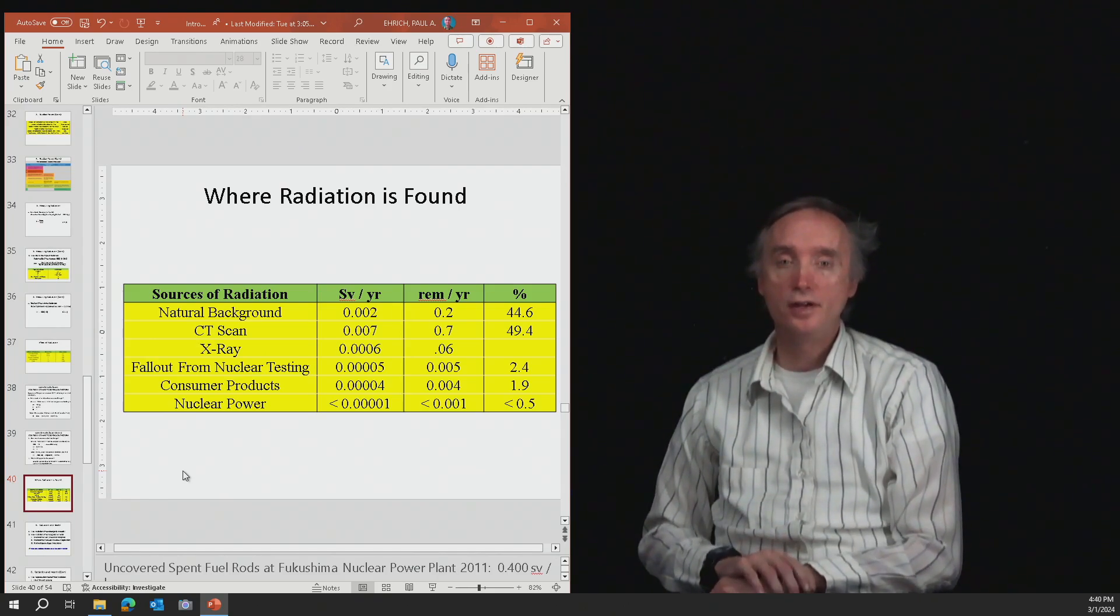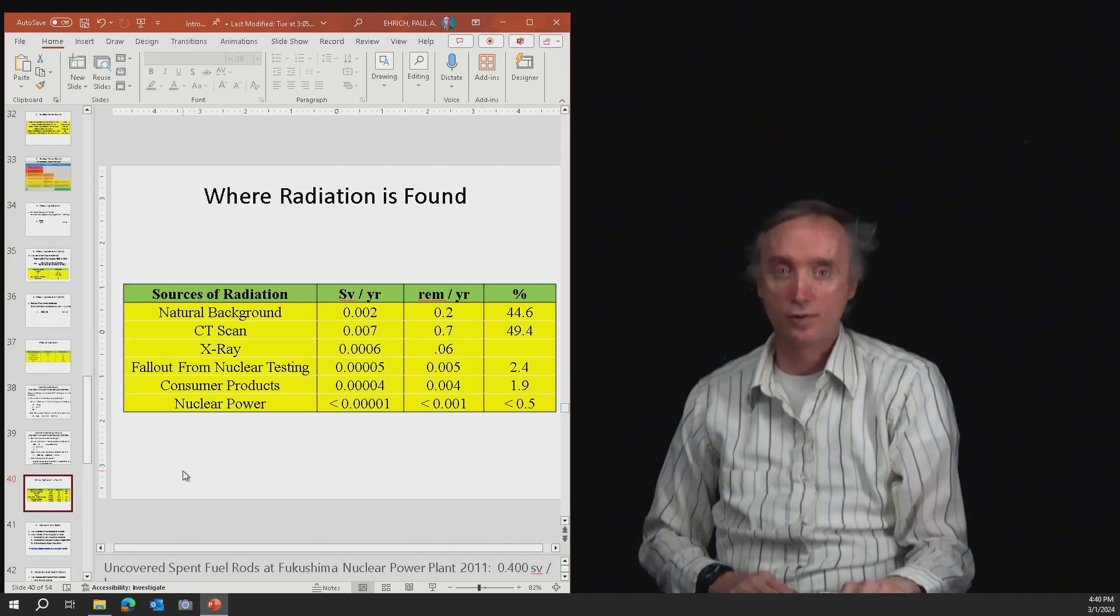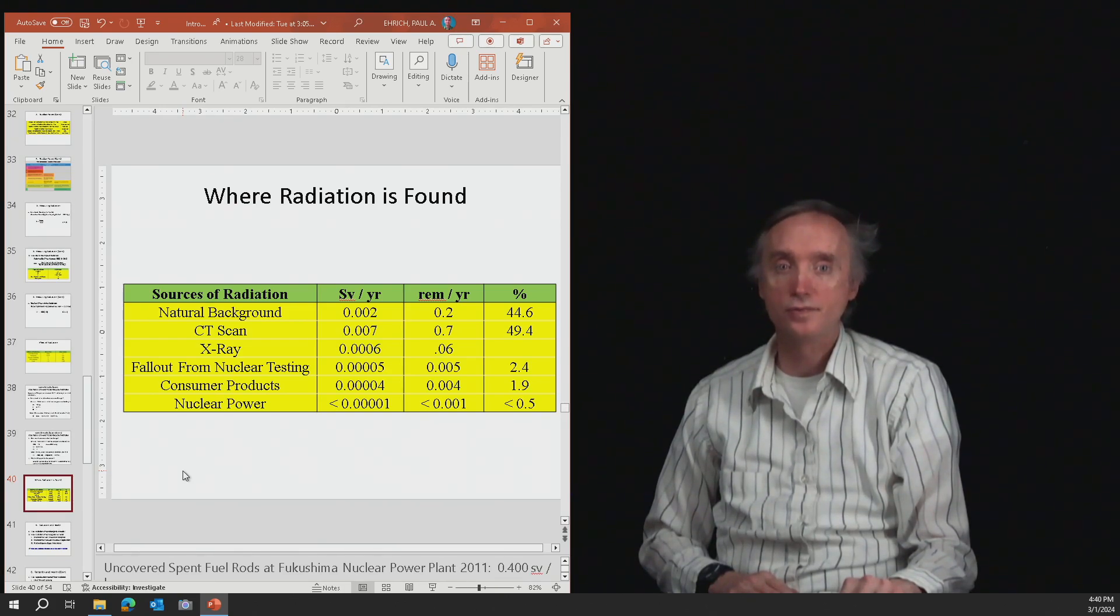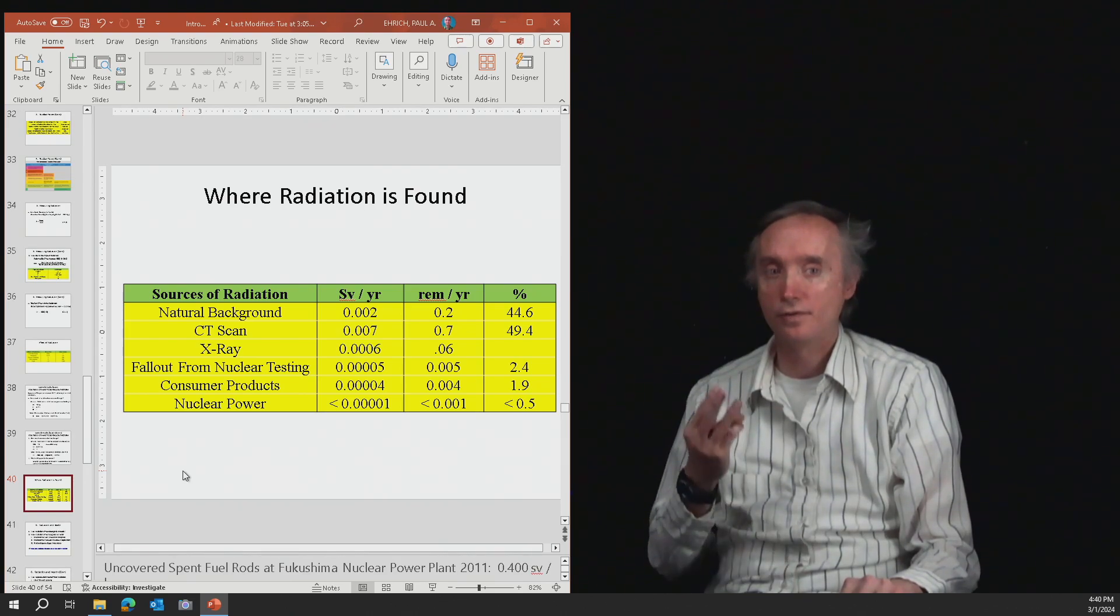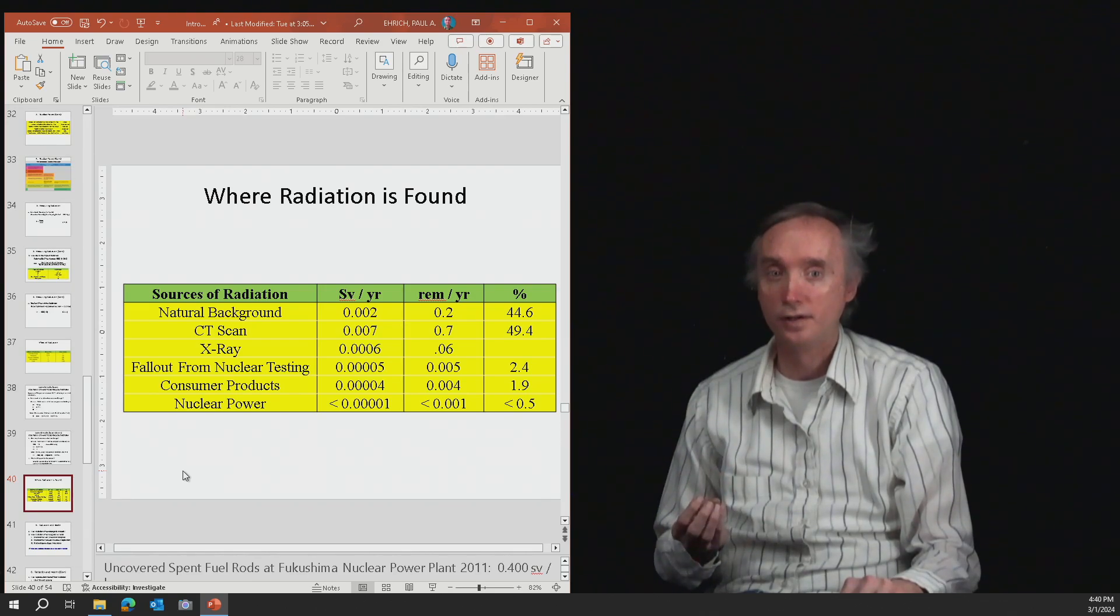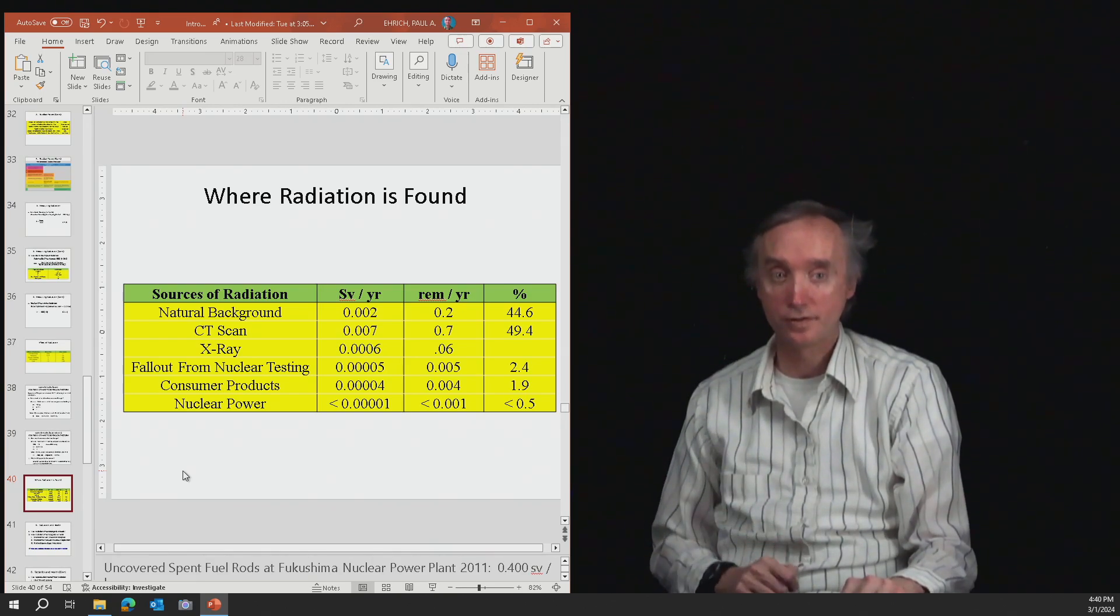If you get a CT scan, however, that's 0.007 sieverts. So do you see that if you got three CT scans in one year, that would be 0.021, and then you would be over your limit for the year.